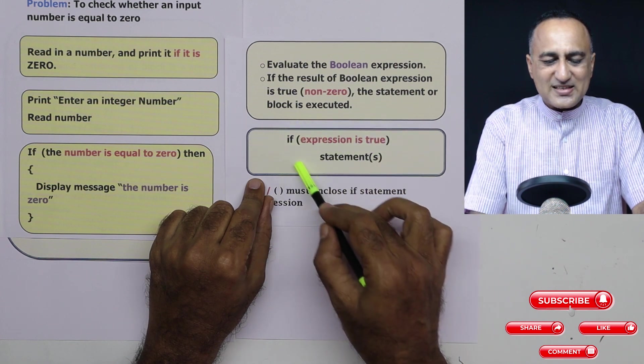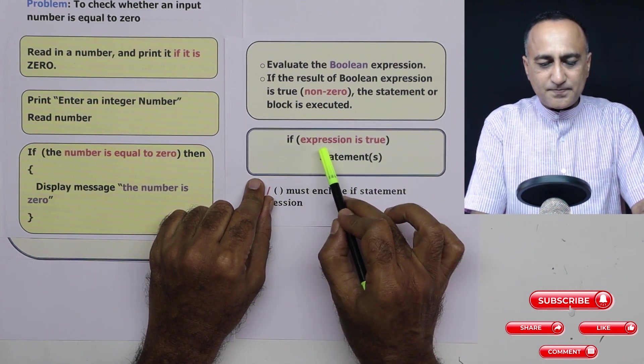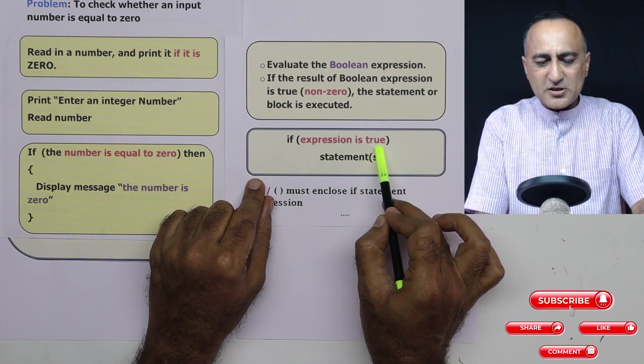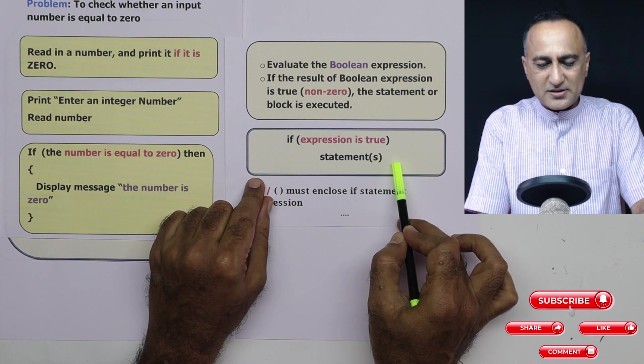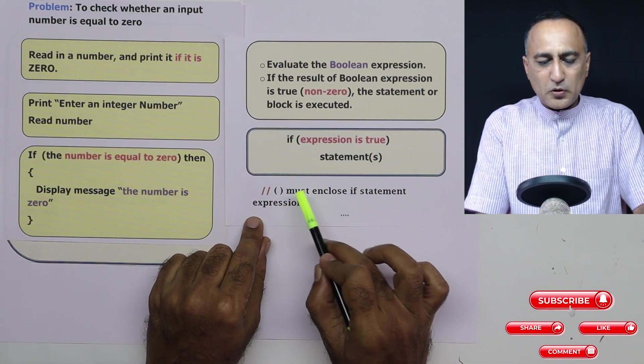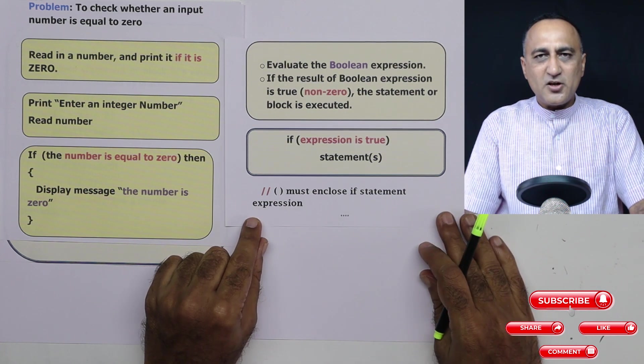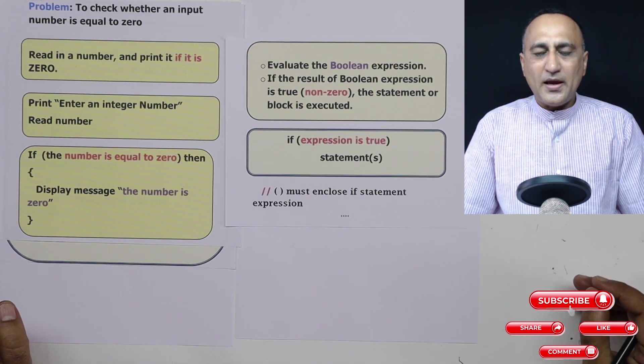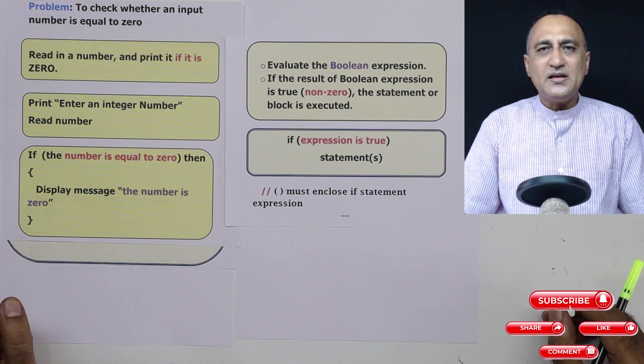So if the boolean expression is true, it will execute zero or more statements. Again, important, you must enclose the expression in round parenthesis. So this should hopefully help you understand how an if statement is used in C programming language.